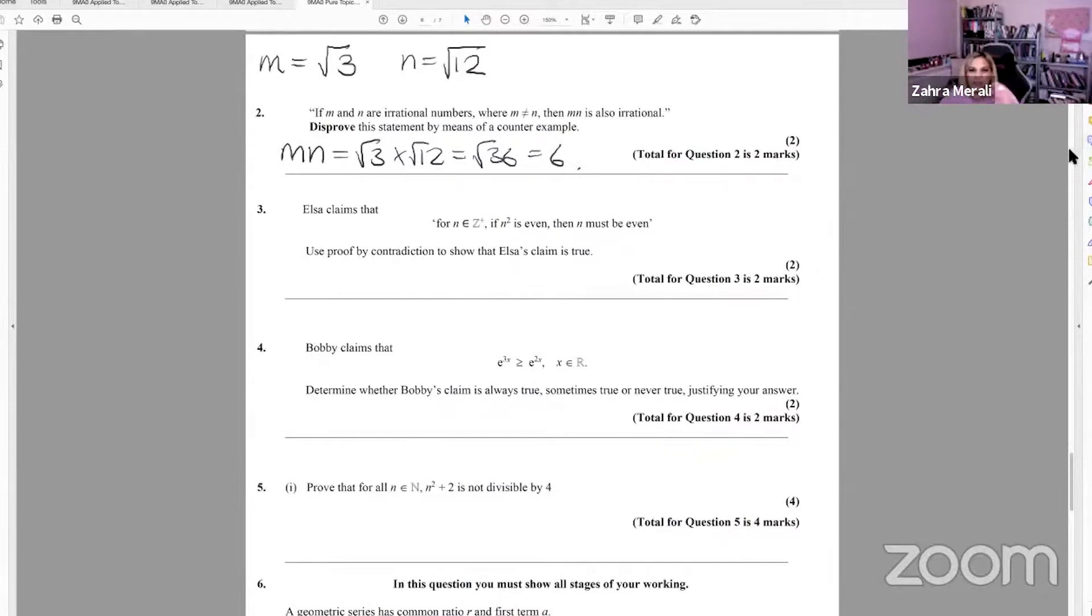And you probably have to write, you need to write a sentence that say, six is not irrational. Or you could write six is rational, as can be seen.